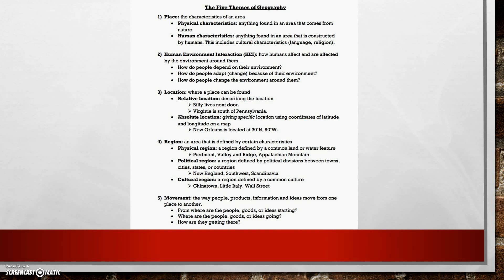These definitions will be something very close to what you'll see on your test. The first theme we covered was place, which is the characteristics of an area. The two different types of characteristics we talked about were physical characteristics — things found in nature — so examples would be trees, land and water features, animals, and other things created by nature.